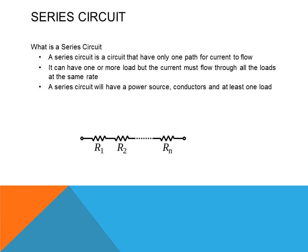A series circuit is basically having a load. A load is anything that consumes electricity, such as a light bulb or electric heater — motors are loads also. A series circuit is a circuit that has only one path for current to flow. It can have more than one load, but the current must flow through all the loads at the same time at the same rate. The series circuit will have a power source, conductors, and at least one load. For example, since there is only one path for current to flow, many of us understand how Christmas tree lights work — if you take one bulb out, they all go out. In a series circuit, if you take one load out, there is an open circuit.